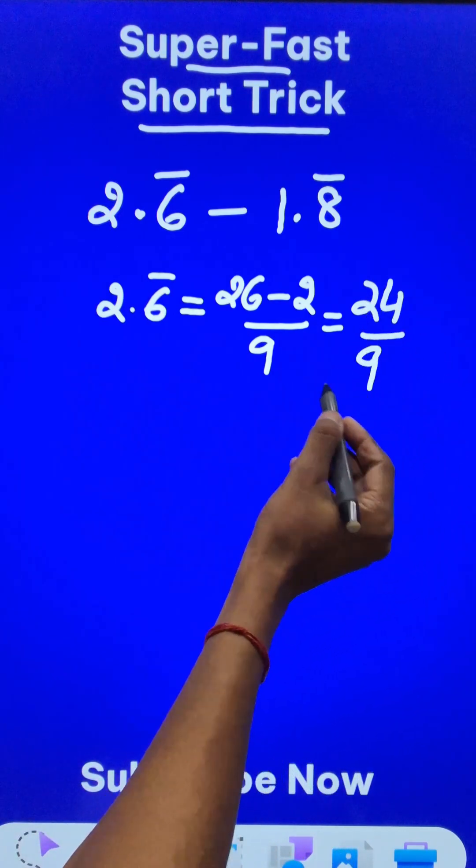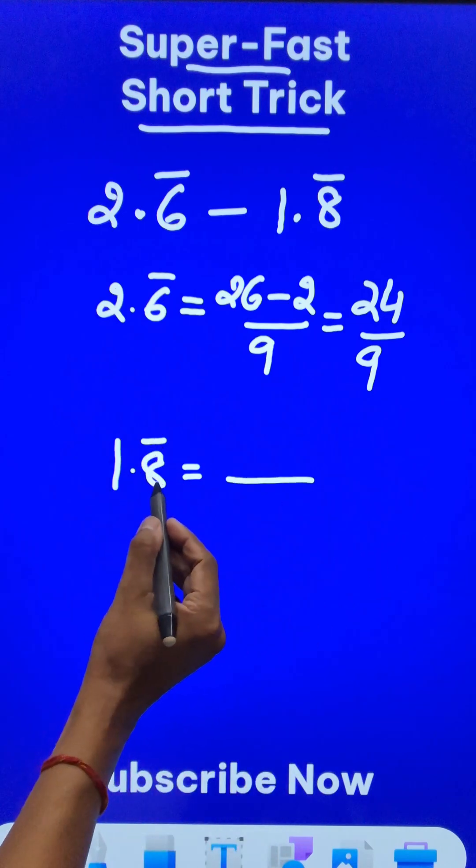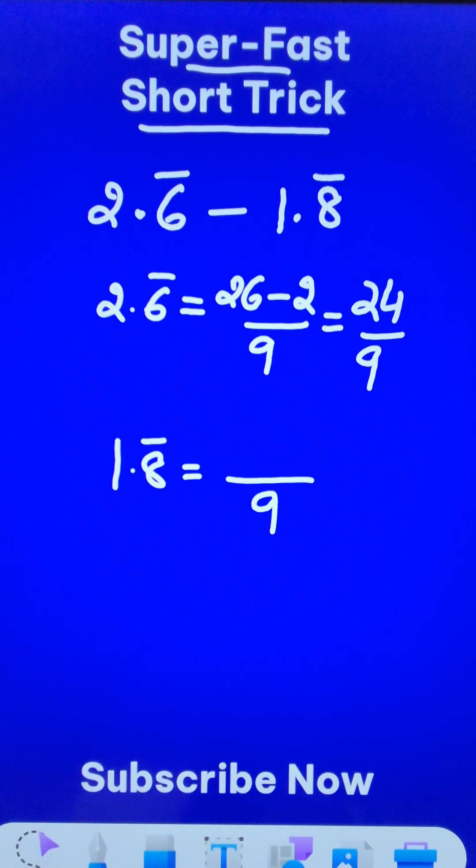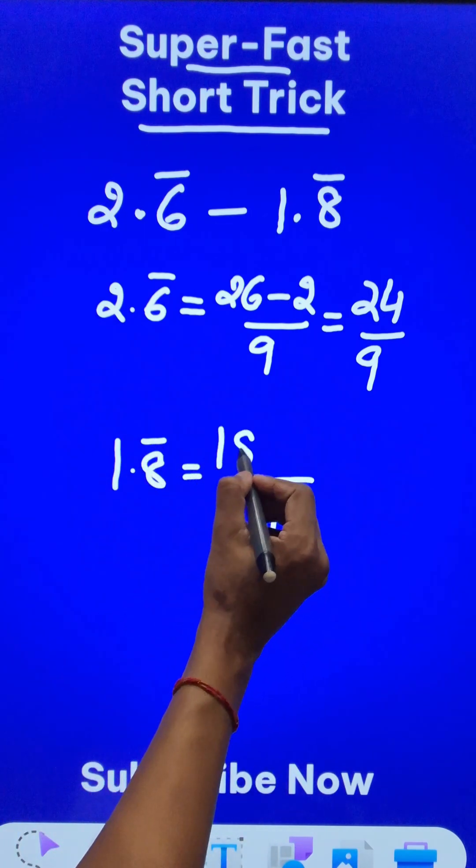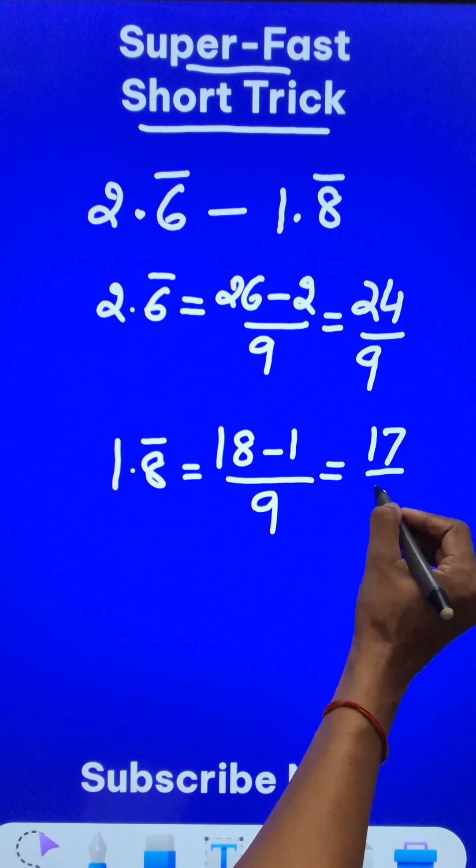So I am not going to reduce it to lowest form. Let's try 1.8 bar first. Here also the bar is over one digit. So only one 9 in the denominator. And then 18 is the entire number minus number without bar is 1. So that comes out to be 17 upon 9.